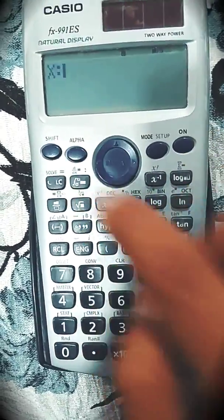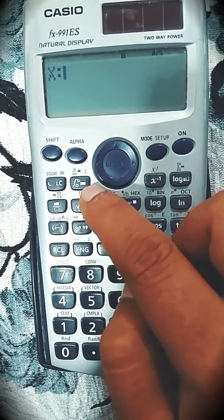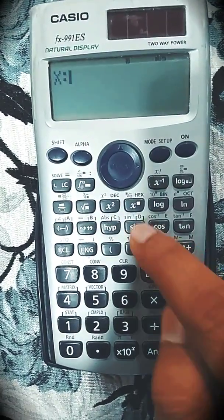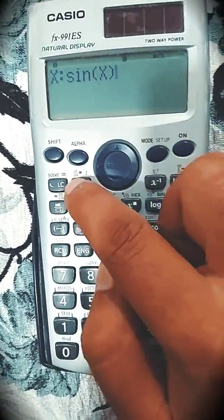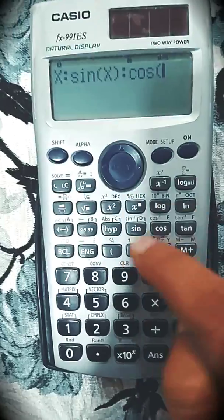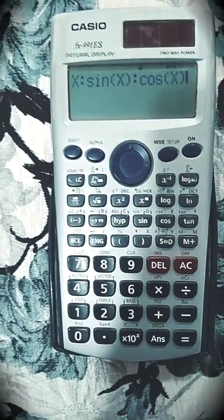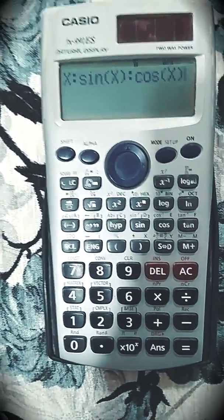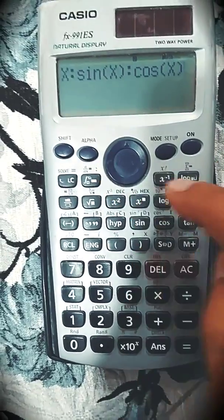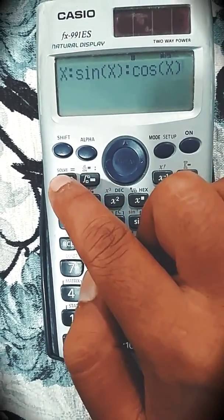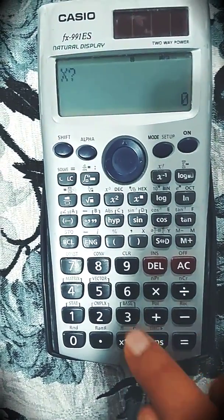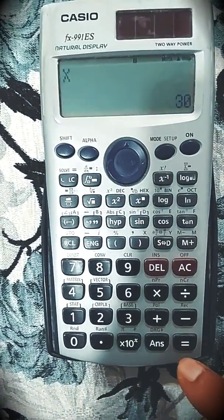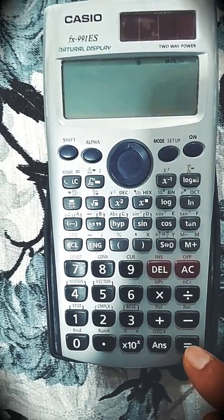X, sin X, colon, cos X. So this column divides columns of the table here. Cos X, and I want to calculate it. Just press calculate button. It will ask for the value of X. Let's take it at 30. It will give you values.